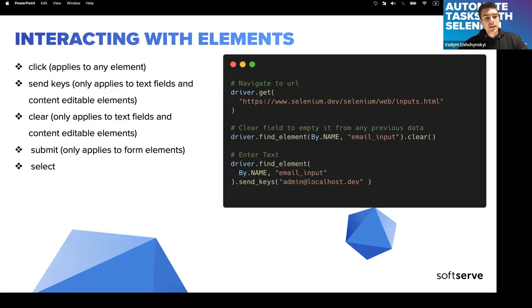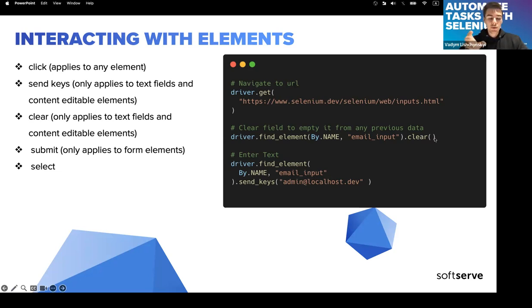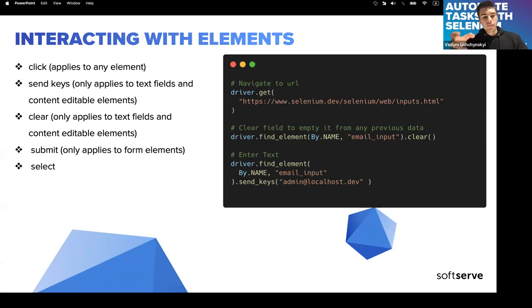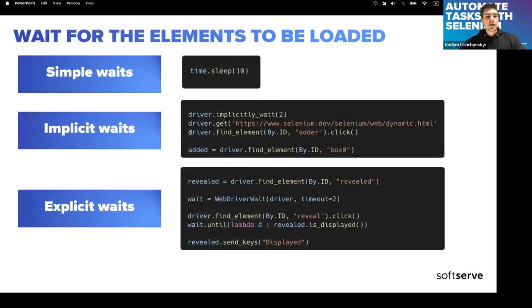We can use 'send_keys' to send data to forms or input fields — passing text, email, or any value. We can also clear a field before sending keys. There's a 'submit' function that lets us send a form, similar to an API call — we find the form, pass the parameters, and submit it.